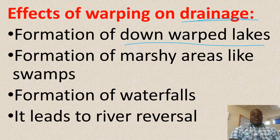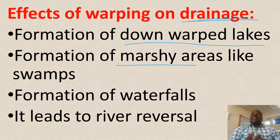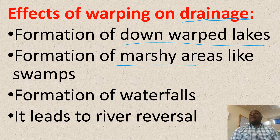Formation of marsh areas, like swamps. This may result from broad warping, or up-warping and down-warping.